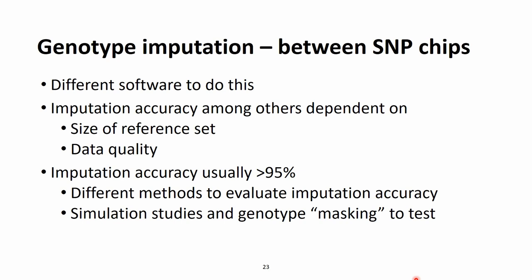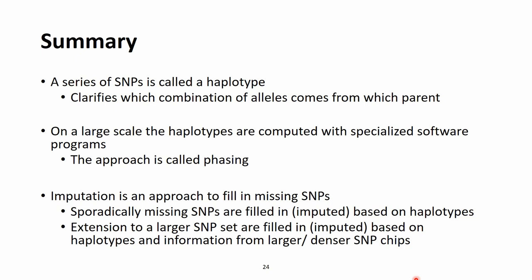This software does a surprisingly good job, and we have now arrived at the end of this segment. Haplotypes are a series of SNPs that clarify which combination of alleles comes from which parent. For large-scale computations on real genotypes we need computers, and there is a range of specialized software programs that does the job — this approach is called phasing. These phases or haplotypes can then be used in various ways, one of which is the imputation process — nothing else than filling in the missing SNPs in our data.